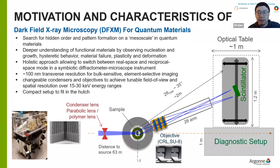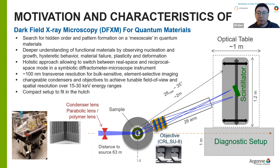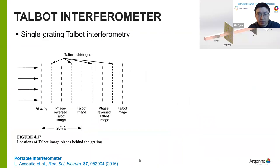Based on all these requirements, we designed this dark field x-ray microscope. The setup is 63 meters away from the x-ray source to get a balance of spatial resolution and field of view. We use a matched pair of polymeric condenser and objective lens. We also built our transfocator using Beryllium CRL, which can easily change the focal length. A diagnostic table will be used for bright field setup such as grating interferometer for phase contrast imaging. For the dark field x-ray microscope, the key component is the polymer condenser and objective lens.